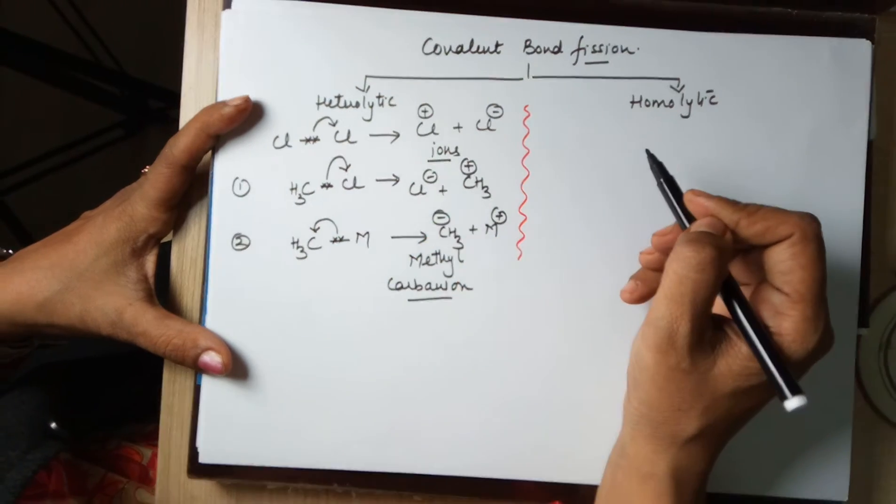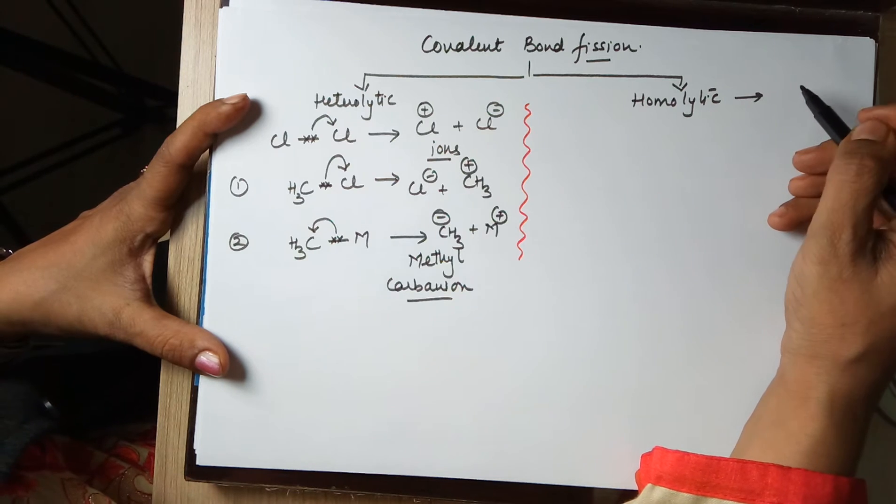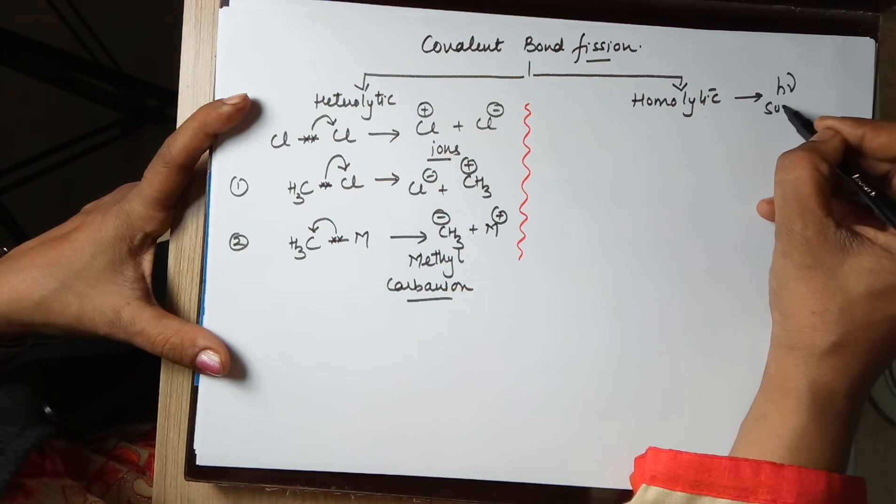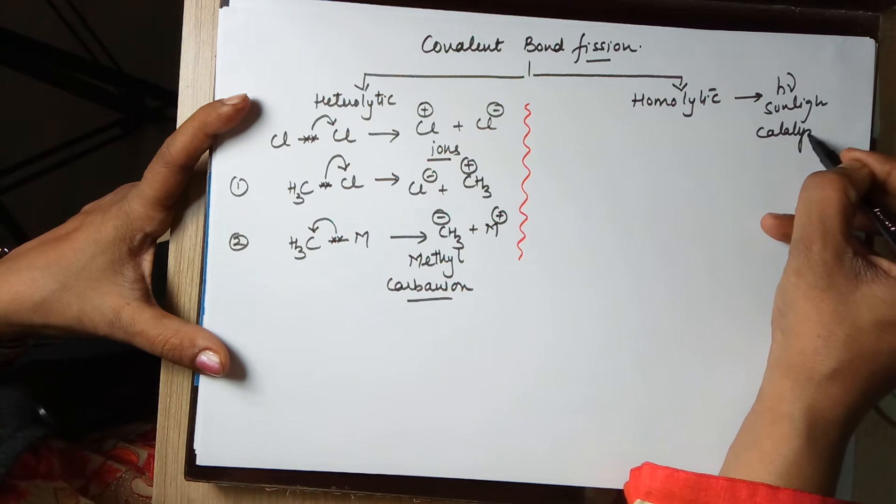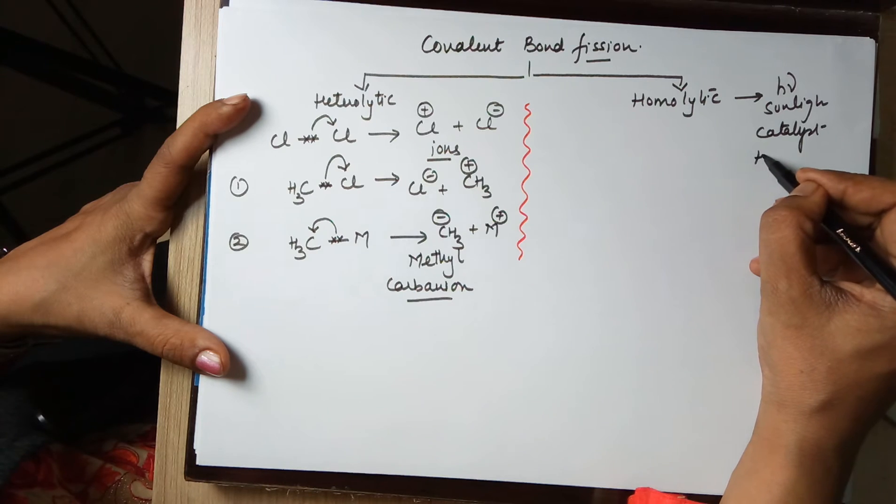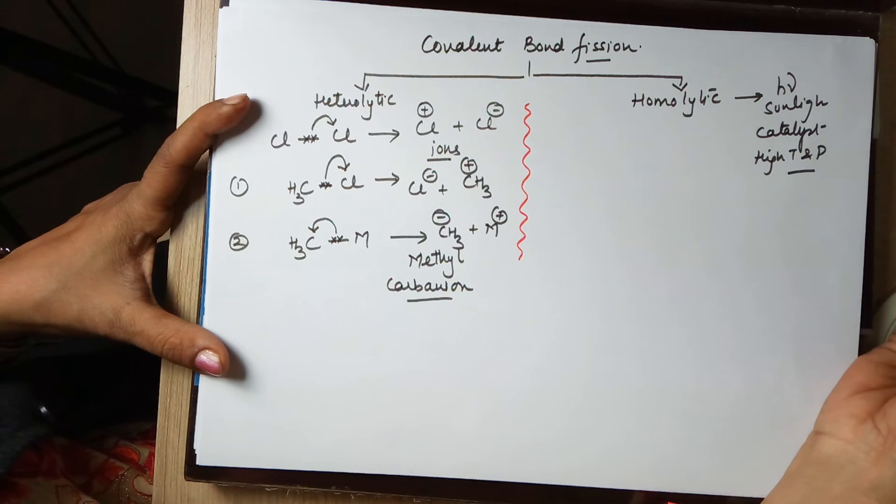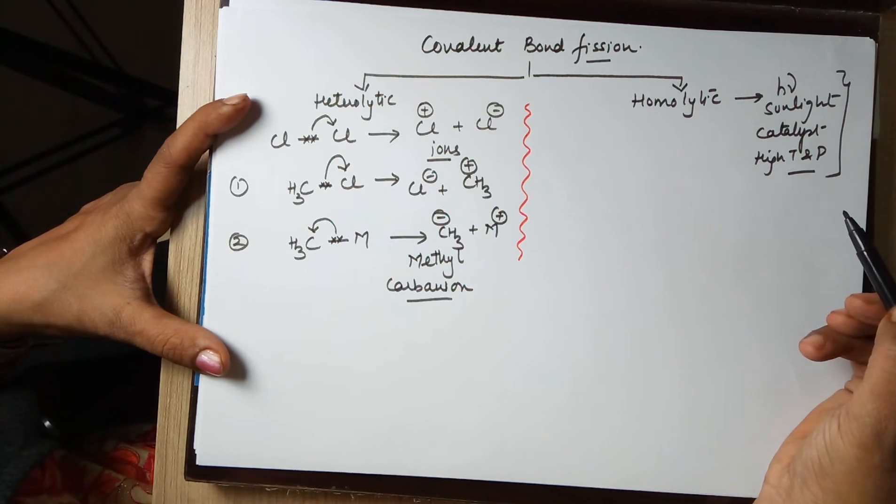While if I talk about homolytic cleavage, this kind of cleavage requires special conditions. For example it could be radiation that is sunlight, it could be a catalyst, it could be high temperature and pressure. General conditions that you require when you are talking about homolytic fission.